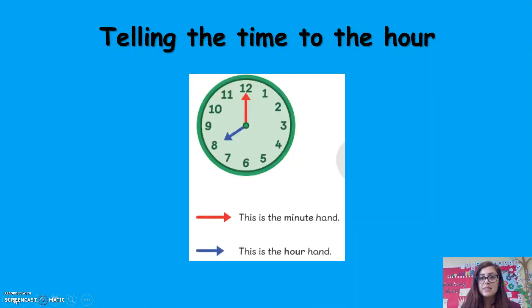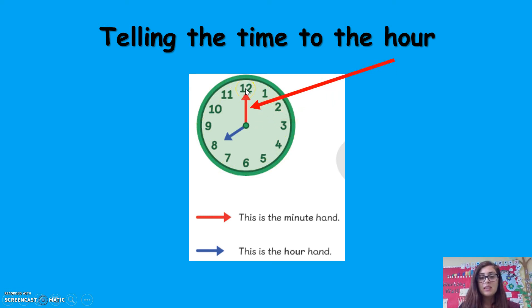This is a clock. A clock is made up of a clock face, with numbers from 1 to 12 arranged clockwise, a minute hand, and an hour hand.